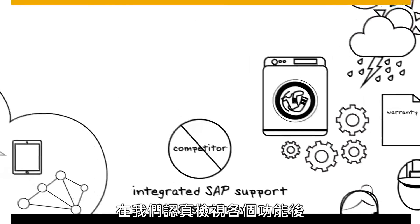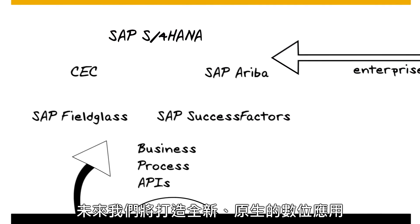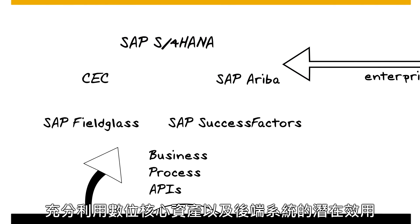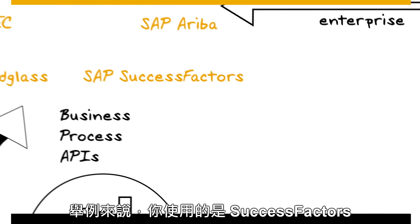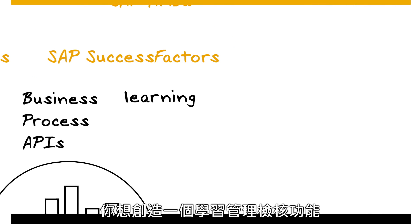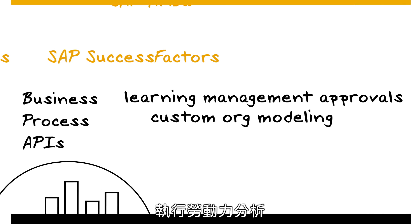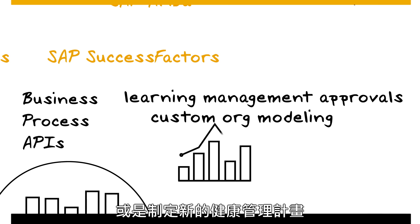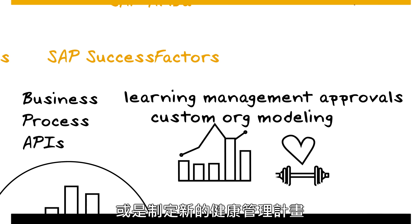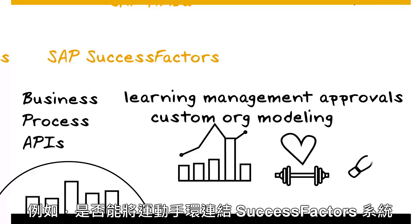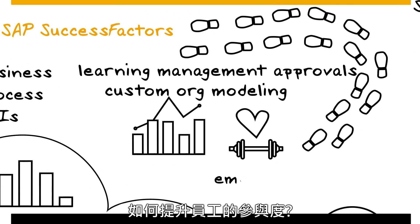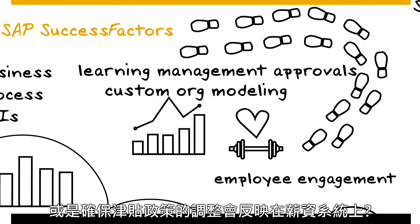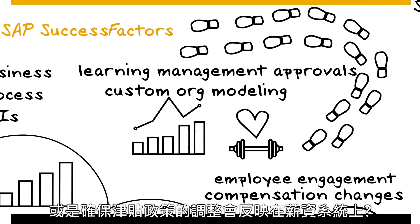When we take a look at this individual capability, it will allow you to build new native digital apps leveraging our digital core and digital back office assets, and it will also allow you to modernize applications. For example, if you have SuccessFactors and wanted to create learning management approvals or custom org modeling, do workforce analytics, or even health and fitness integrations — like getting health insurance discounts based on Fitbit steps by integrating with your SuccessFactors system — you can improve employee engagement and ensure compensation changes are reflected in your payroll system.